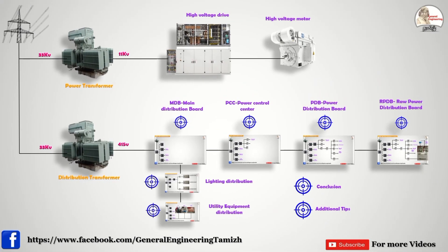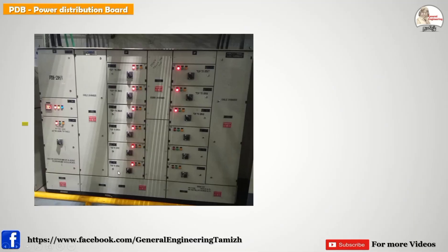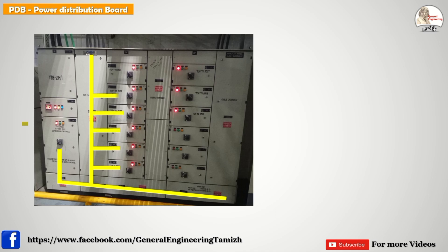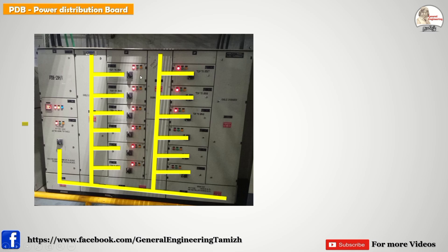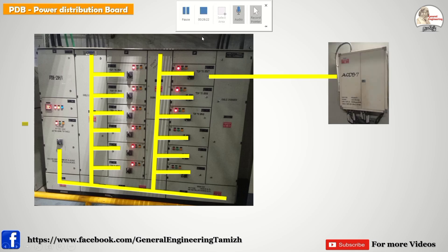Now PDB is completed. The PDB panel looks similar to the PCC but the panel size is smaller. The incomer breaker supply comes from the PCC. Across the PDB, power distribution is done the same way — from the incomer breaker, all outgoing feeders are connected through the bus bar. The key difference is that the breaker rating is smaller because the connected load rating is also smaller. From the outgoing feeder, RPDB and welding circuits are connected, with names labeled on the panel.